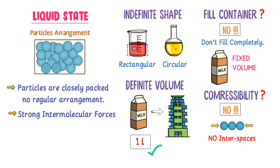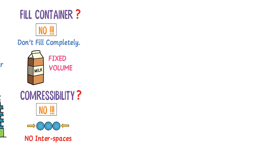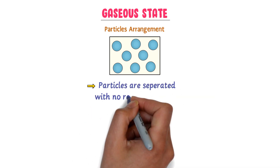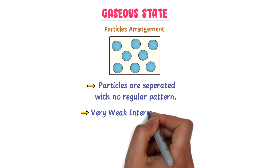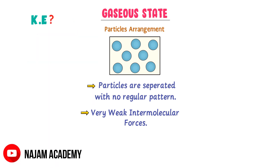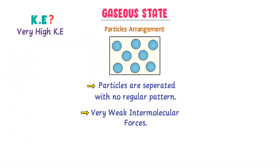Now let me teach you about the gaseous state of matter. At microscopic level, this is the arrangement of particles in gases. In gaseous state, particles are separated with no regular pattern. The intermolecular forces between particles are very weak. The particles of gases possess very high kinetic energy, and it is due to this high kinetic energy that they move freely in random or irregular motion.